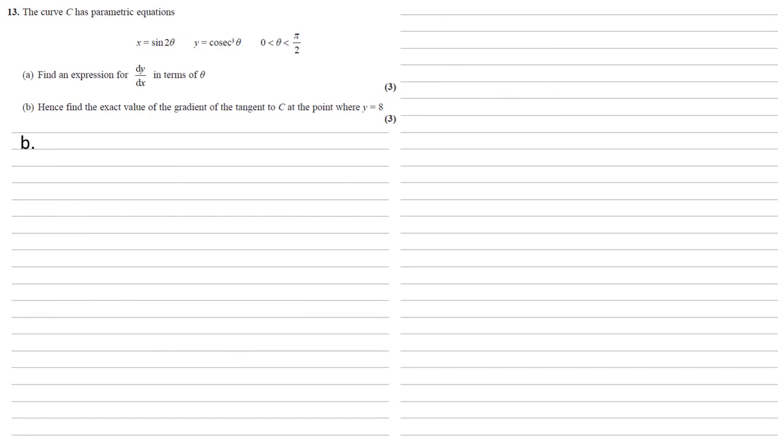For part B, hence find the exact value of the gradient of the tangent to C at the point where y equals 8. So we've got our expression for dy by dx, but this is in terms of θ. We've been given y equals 8, so we're going to need to convert that. We know that y equals cosec cubed θ, so we're going to set that equal to 8.